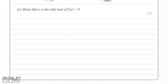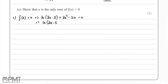For part C, we're asked to show that α is the only root of f(x) = 0. We set f(x) = 0: ln(2x - 5) + 2x² - 30 = 0. Rearranging to get each x term on either side gives ln(2x - 5) = 30 - 2x². These two terms must be equal.